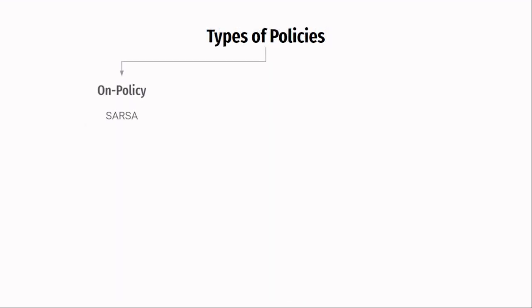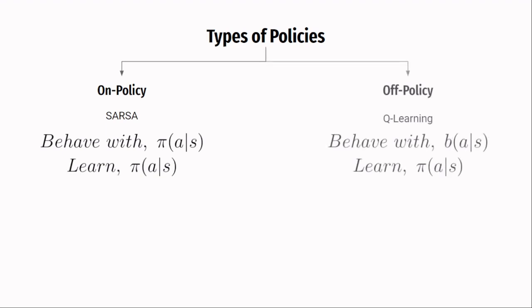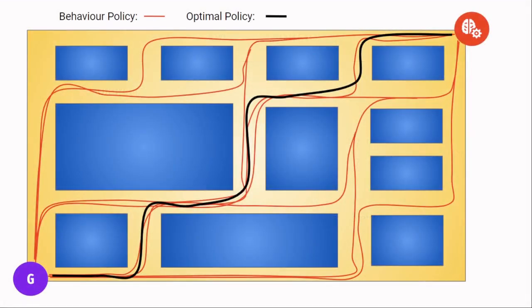SARSA is an on-policy algorithm. On-policy methods attempt to evaluate or improve the same policy that is used to make decisions. Off-policy algorithms evaluate or improve a policy different from the one used to generate experiences — the agent behaves with a behavior policy while learning an optimal target policy. The behavior policy is often more exploratory than the target policy. On-policy algorithms learn values for a near-optimal policy that still explores, while off-policy algorithms learn an optimal policy while behaving with a more exploratory policy. That's why off-policy algorithms are more powerful than on-policy algorithms.